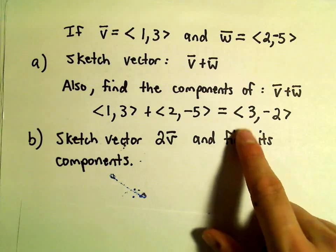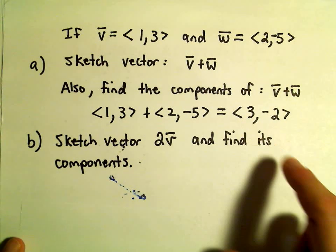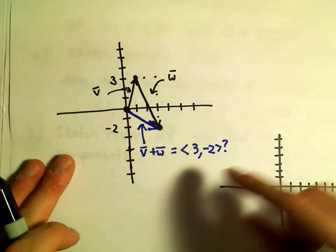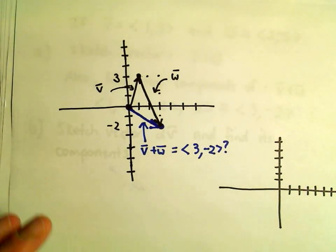And hey, so it says if you add them, the new vector will have components 3 comma negative 2, and that's in fact, you know, that's what happens from our graph here.